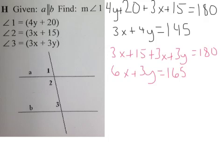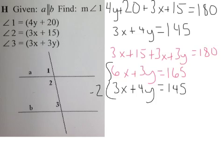Now I can put these two together. This is my system right here. So I'm going to try and cancel out one of our variables. I'm going to multiply the bottom one by negative 2 because that's going to allow me to cancel out the x's right here. So what I have here is negative 6x minus 8y equals, and I'm going to get negative 290.